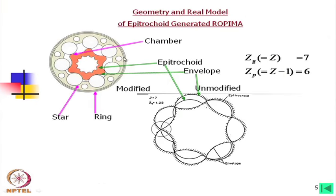The chambers are between the active contacts. This space — the variation of area multiplied by the constant width — gives the variation of volume. This profile is called a modified epitrocoid, while the outer profile is called the envelope. The ring is the envelope and this is the star.